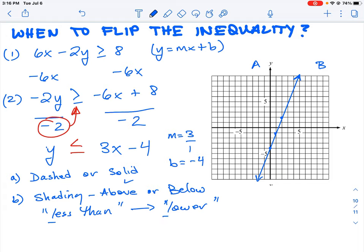If it was the opposite - if it was greater than - then we would shade the opposite side. We would shade the upper side.